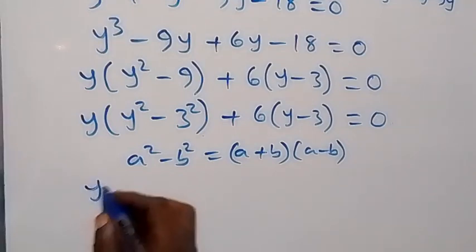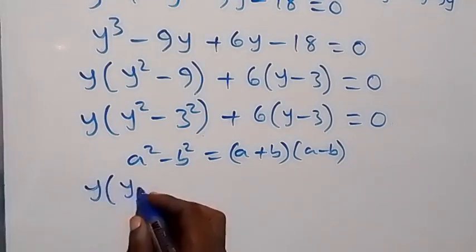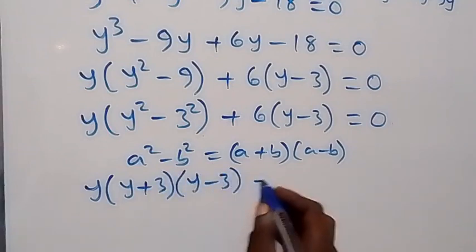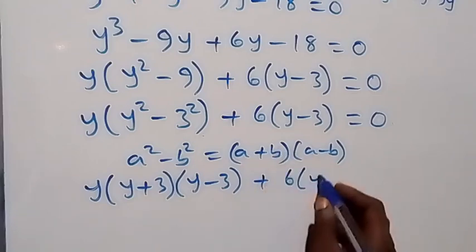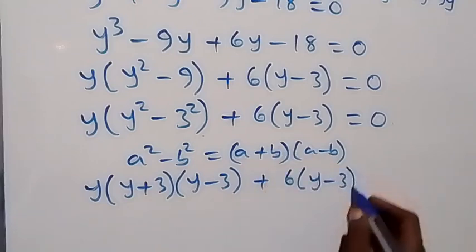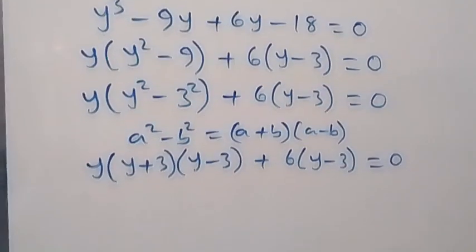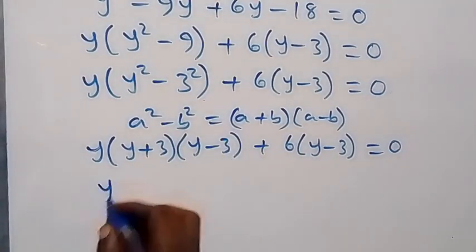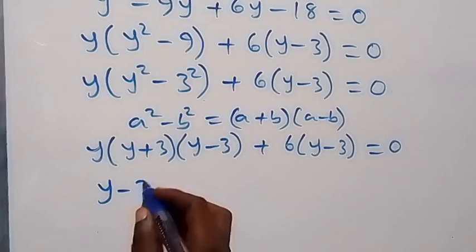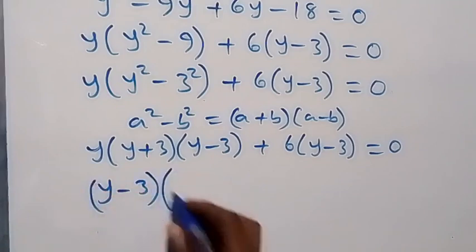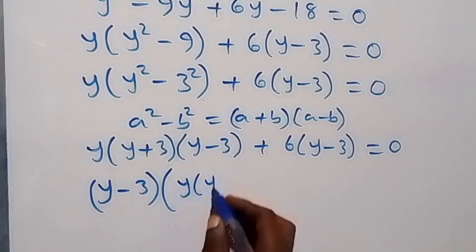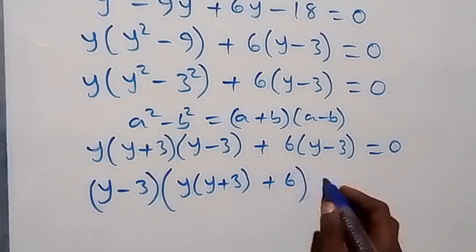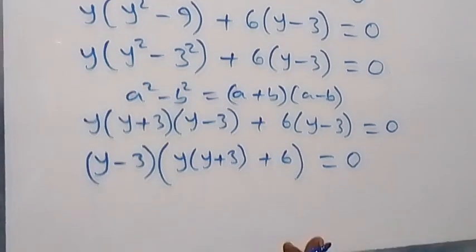Here, this follows this pattern, so we have y into bracket y plus 3, into bracket y minus 3, plus 6 into bracket y minus 3, equals 0. Now, we can factor out y minus 3, then into bracket y times y plus 3 plus 6, equals 0.